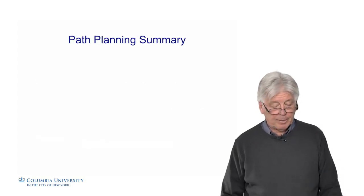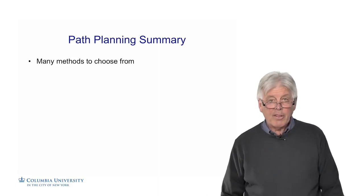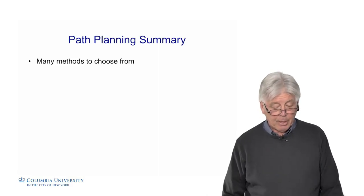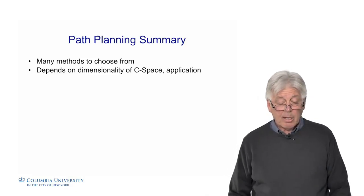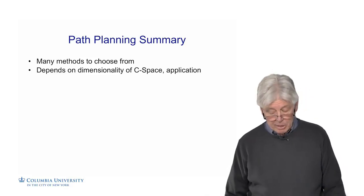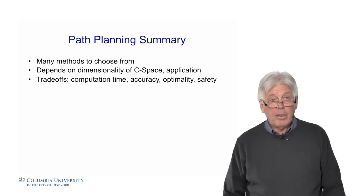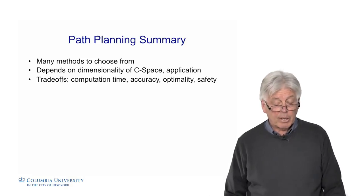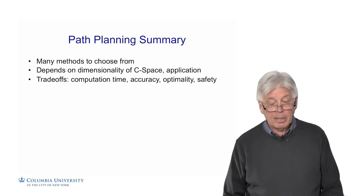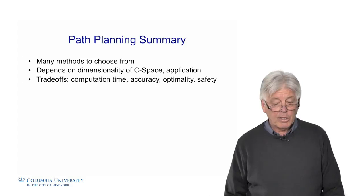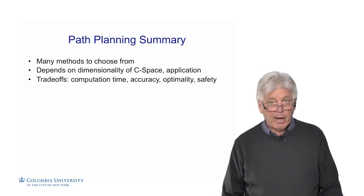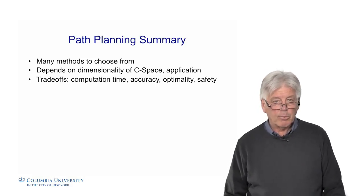Let's summarize what we talked about today. There are many methods of path planning to choose from. Really, the one you want to choose depends a lot on the dimensionality of the configuration space and the application. There are trade-offs in computation time, accuracy, optimality, and safety, and you have to weigh these with your problem and your application to see which is most important. If you're out in the prairie, you don't have to worry about running into things. If you're in the city, you do. So it depends on where your planner is being used and for what reason.